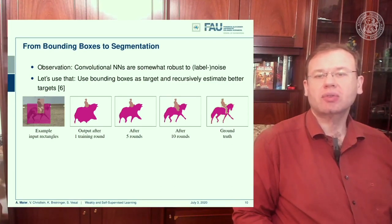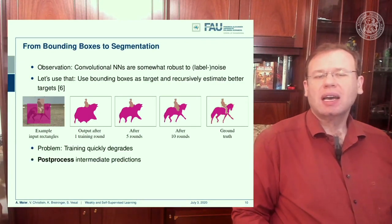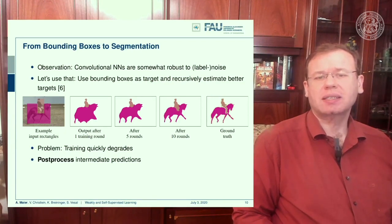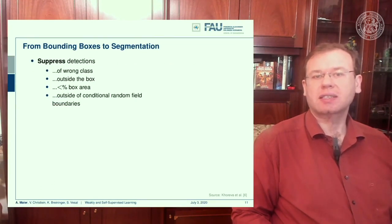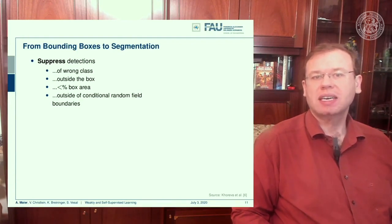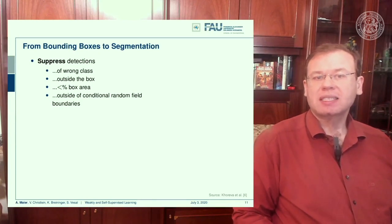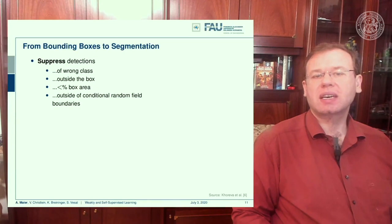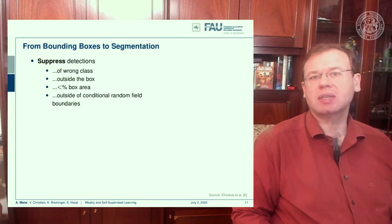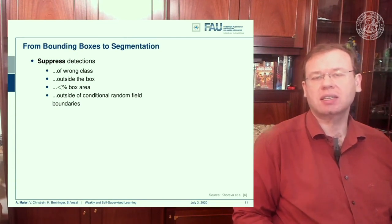On the right-hand side you can see the ground truth and how we gradually approach it. However, training very quickly degrades without post-processing of intermediate predictions. The tricks used include suppressing wrong detections — since within a bounding box it's unlikely to have a very different class — removing predictions outside the bounding box, checking if predictions cover less than a certain percentage of the box area, and using a conditional random field boundary to run a traditional segmentation approach to refine boundaries using edge information.